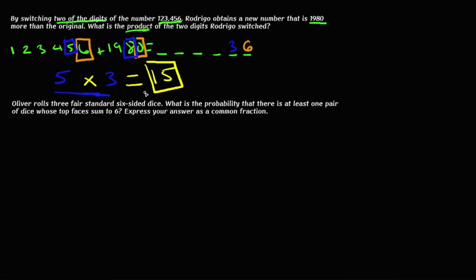We multiply the switched digits — 5 times 3 — and get 15 as our final answer. That shows how skipping steps is really important for speed. The question didn't ask for the full new number; it just asked for the two switched digits and their product. Be aware of exactly what you're trying to find so you can skip unnecessary steps. That question was fairly easy — it would probably be an early-to-middle question and should take about 10 to 20 seconds.